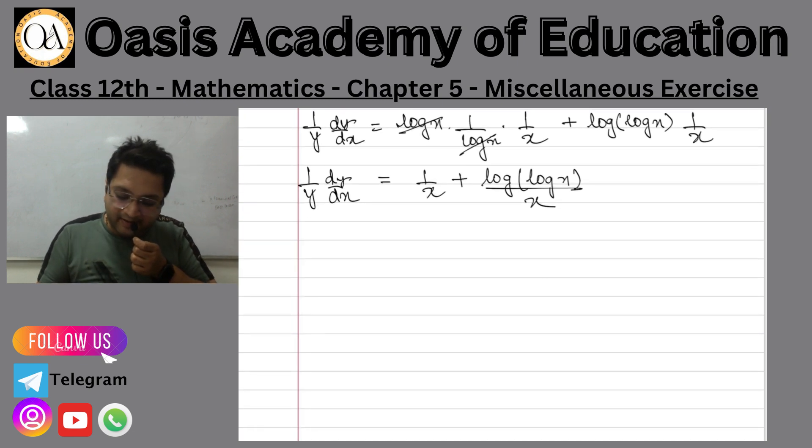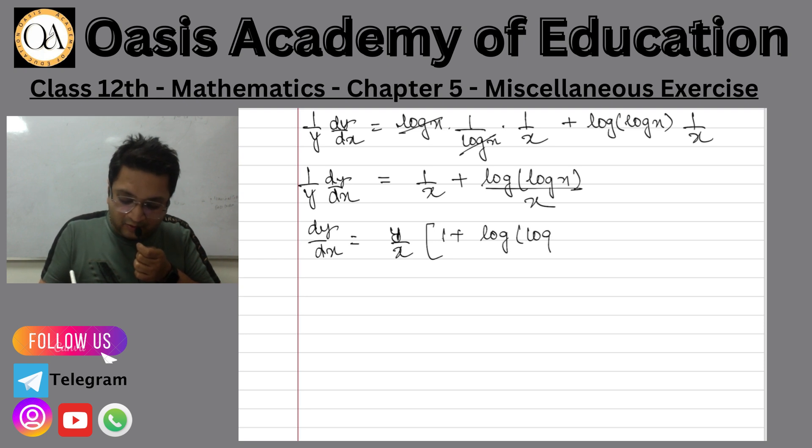If you will see here, I can take 1 upon x common and take y to that side. So dy by dx equals y upon x into 1 plus log log x.